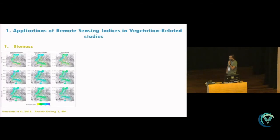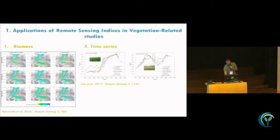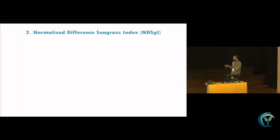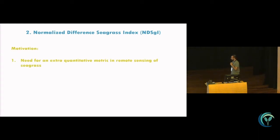As regards vegetation-related applications, NDVI was developed in 1973 to measure terrestrial biomass, and since then has been used in time series of healthy croplands, leaf area index, and related biophysical variables. In contrast to NDVI, we propose the NDSGI, because NDVI measures terrestrial vegetation which reflects highly in the near-infrared and red — bands that are highly attenuated by water. So we have to use different bands to measure seagrass healthiness. The first motivation was the need for an extra quantitative metric for exactly measuring seagrass healthiness.